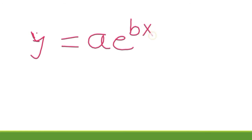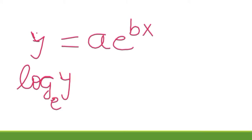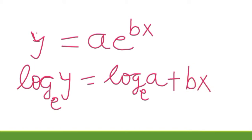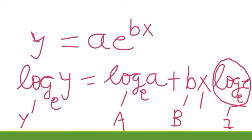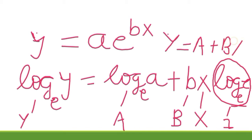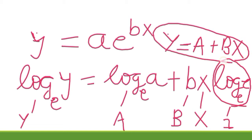For the third type, y = ae^(bx), we again take logarithm on both sides: log y (base e) = log a (base e) + bx·log e (base e). Since log e (base e) = 1, putting capital Y = log y, capital A = log a, capital B = b, and capital X = x, we again get Y = A + BX, and the normal equations are already known.